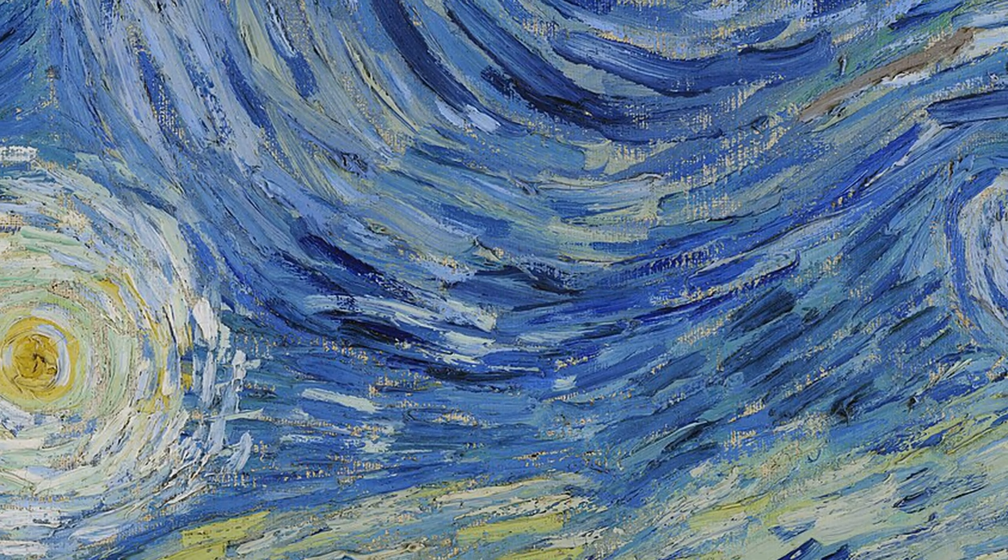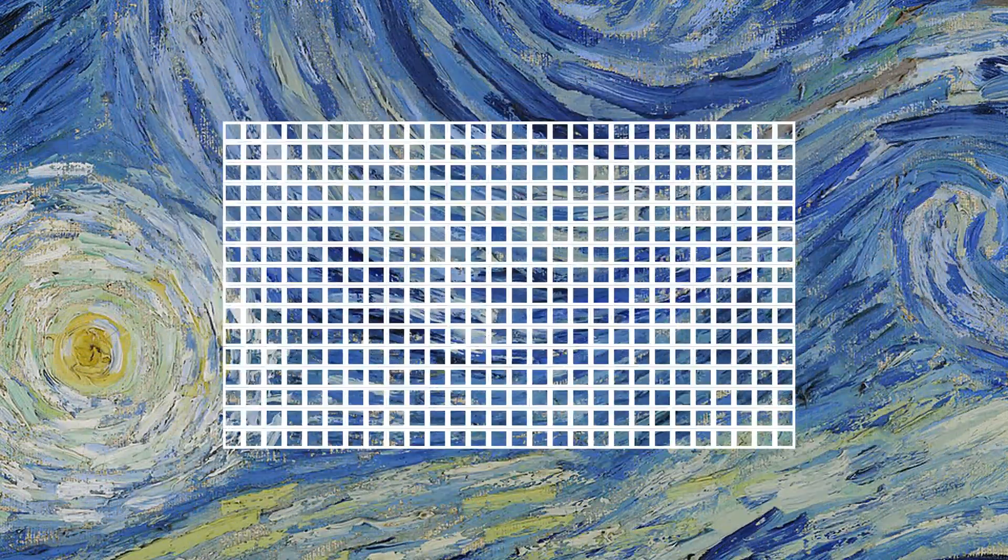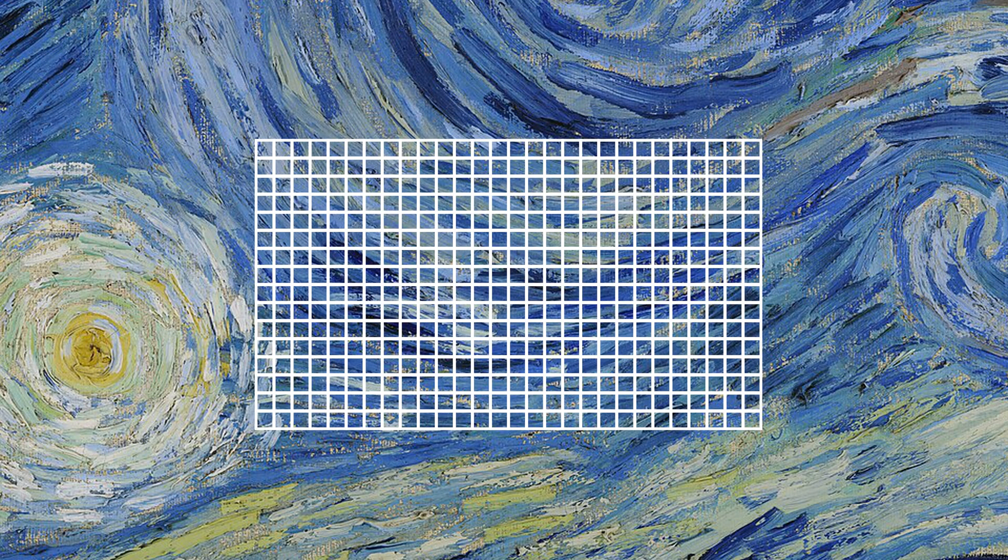I was trying to show the Starry Night painting, but it's too big. Well, we know images are 2D arrays of pixels. Let's try a simple trick. Remove all the even rows and even columns. This should give us a small image, exactly half the size of the original one.